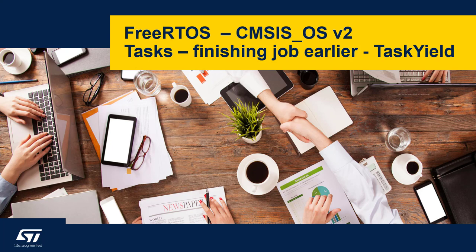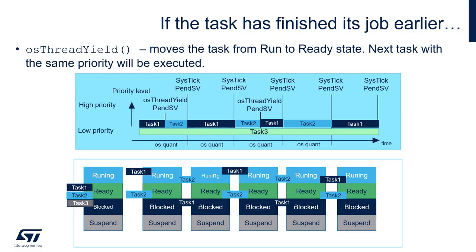Let's look at what happens when a task would like to finish its job earlier. We'll analyze the situation where a task finishes before the time elapses given by the system. It can go to the blocked state using the osDelay function, but in that case we need to precisely define the delay. In many cases it is not known — we just want to be active in the next time slot dedicated to this task, so osDelay is not the best choice.